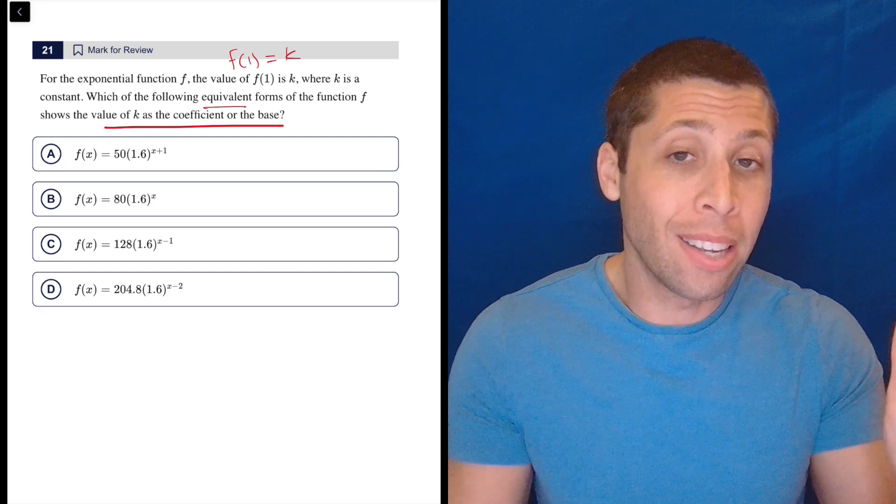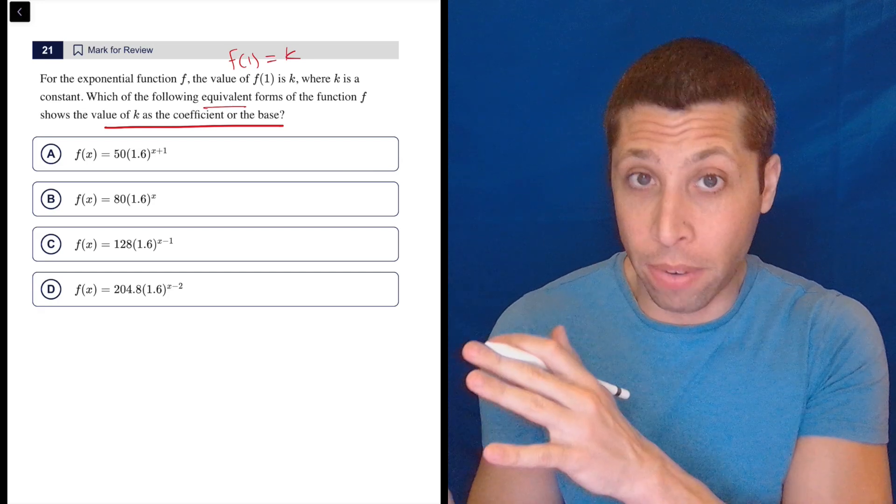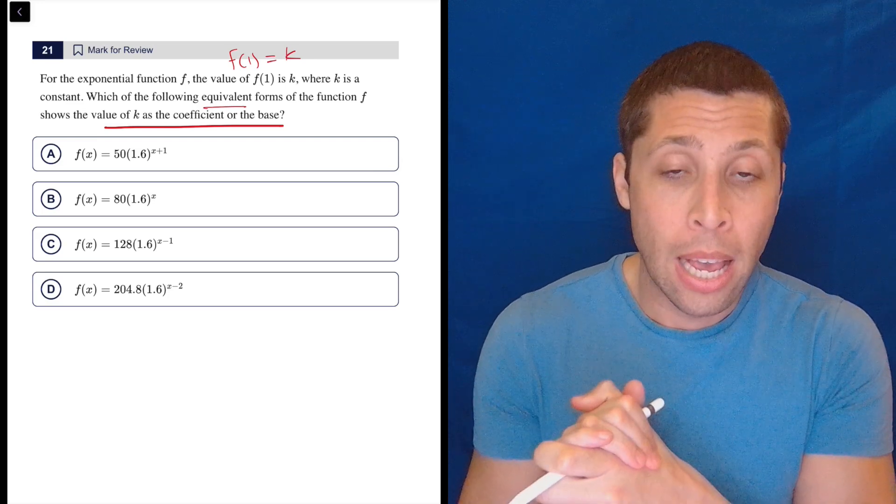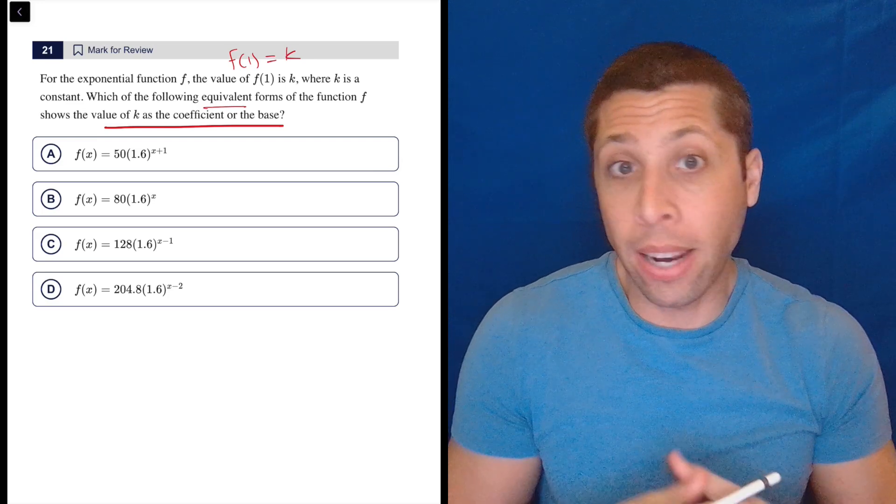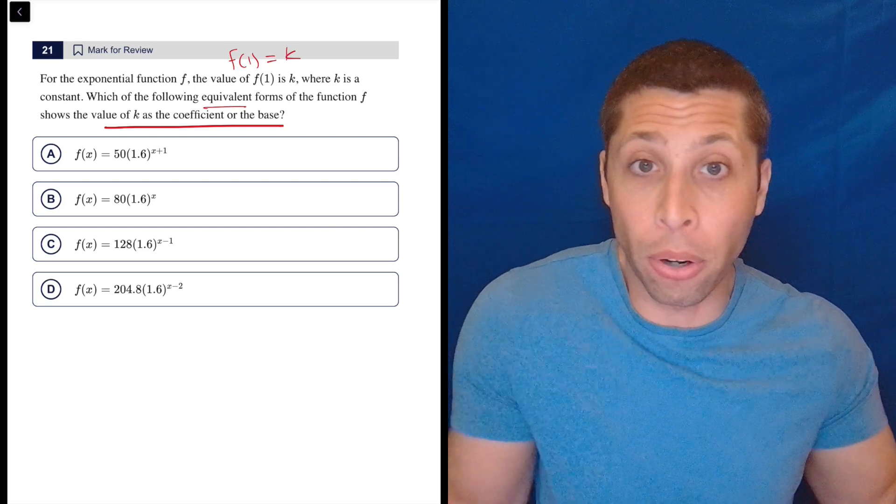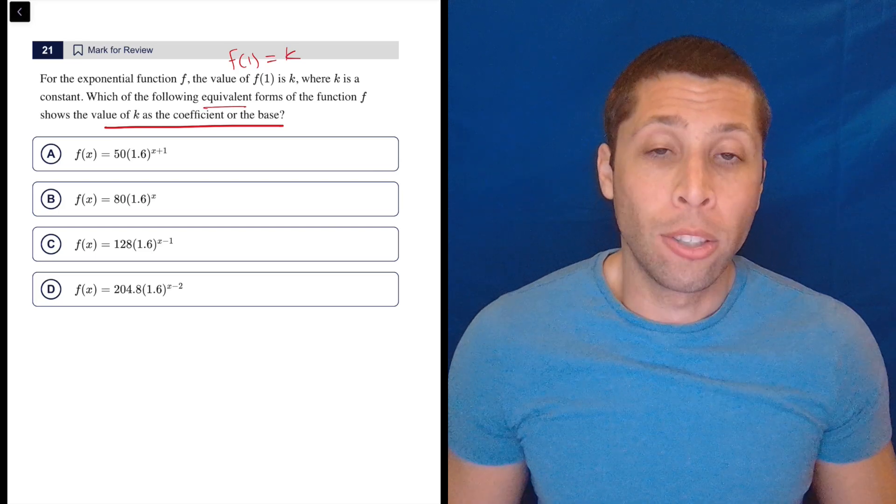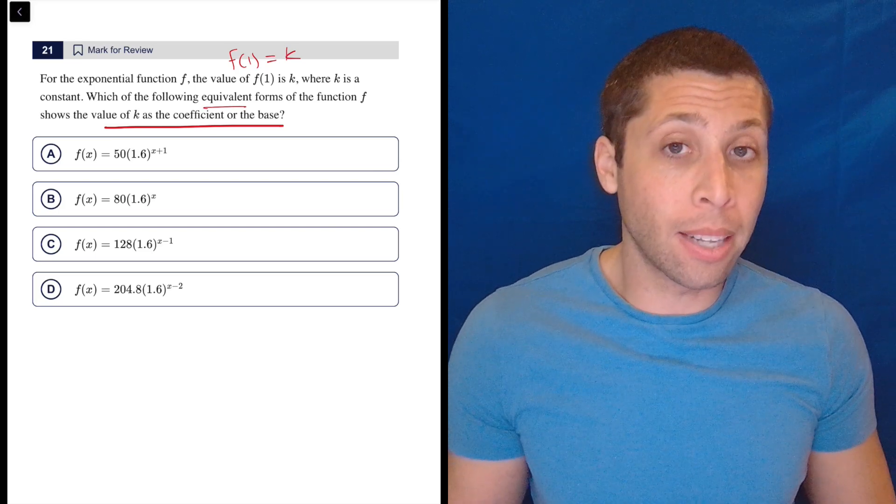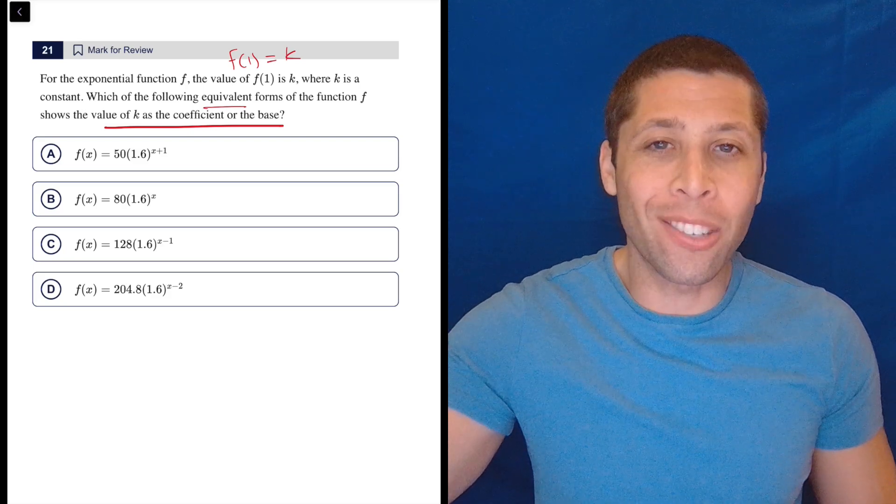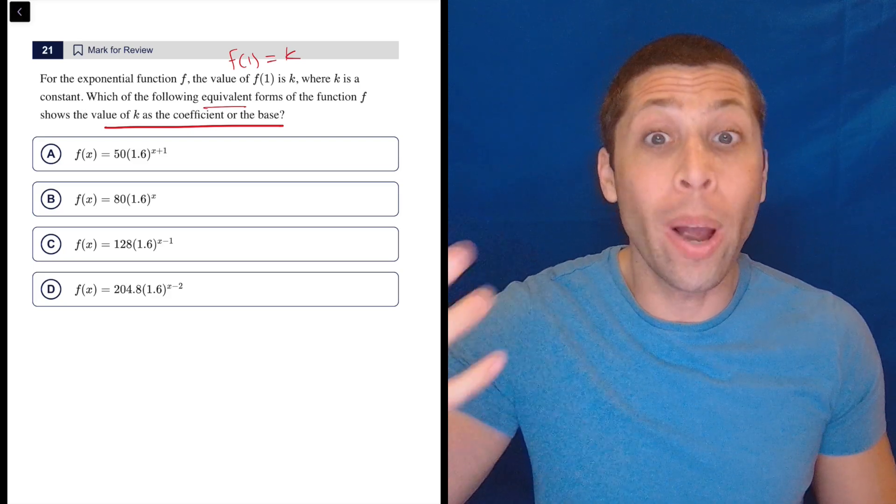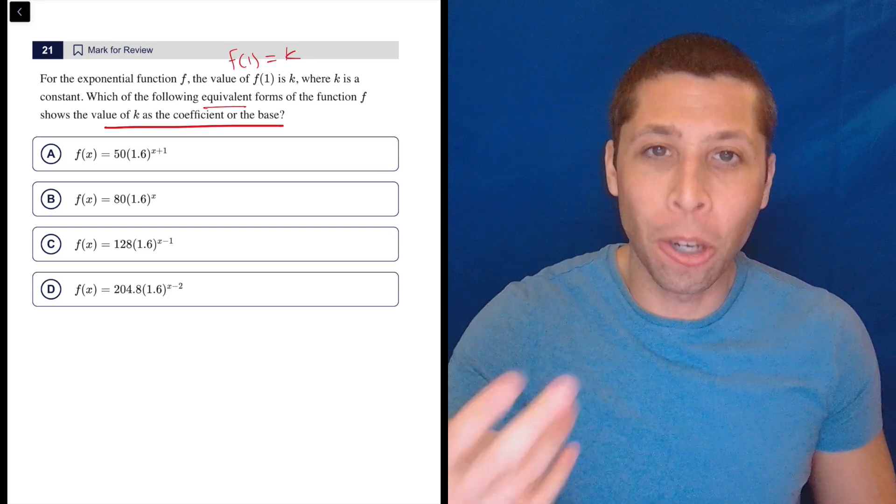A coefficient is a number that kind of comes before usually a variable or some other part of the equation. The base would be the part that the exponent is attached to, and then a constant in an equation is just some other random number. So when we talk about k being a constant, it's doing the same thing. We just don't know yet what that number is for k, so we have to kind of wait and call it a letter until we know for sure.